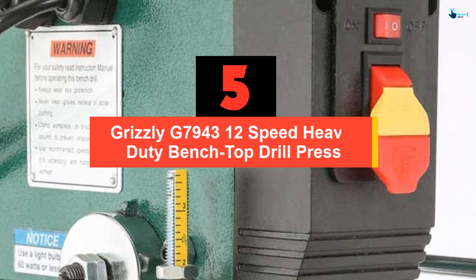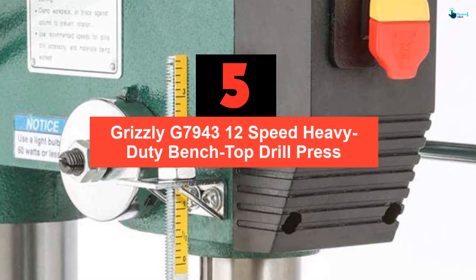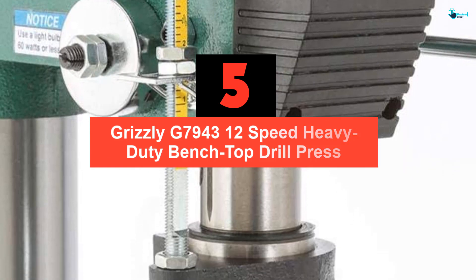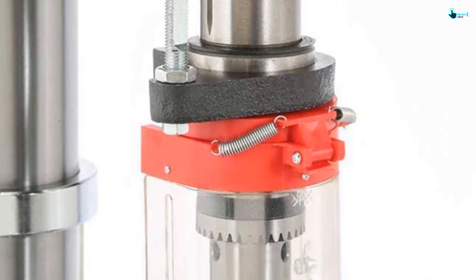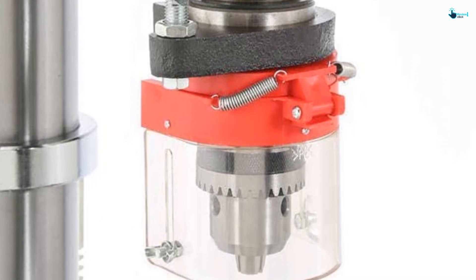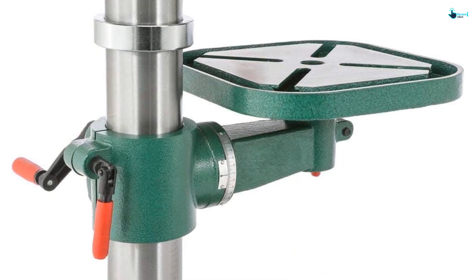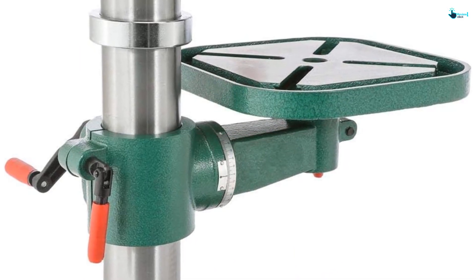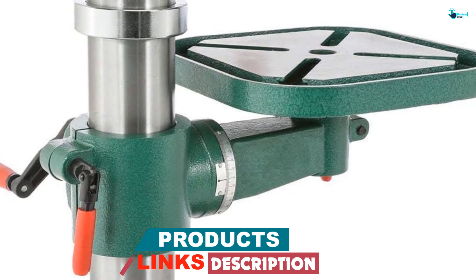Starting at number 5, we have the Grizzly G7943 12-Speed Heavy Duty Bench Top Drill Press. Grizzly Industrial G7943 is the next item on the best floor drill press evaluation. The 14-inch floor drill press works in everyday procedure, whether residential or industrial. The system is extremely durable and will handle the operation well.